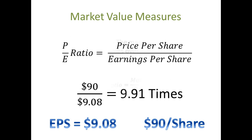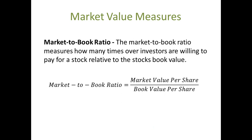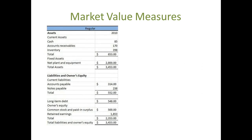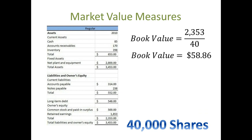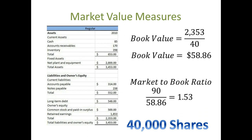The market-to-book ratio measures how many times over investors are willing to pay for a stock relative to the stock's book value. The book value is the company's equity divided by the number of outstanding shares, so the market-to-book value is calculated as market value per share divided by book value per share. In our case, our book value per share is $2.353 million divided by 40,000 shares, which comes out to $58.86. And our market value is $90 per share, so we do $90 divided by $58.86, giving us a market-to-book ratio of 1.53.